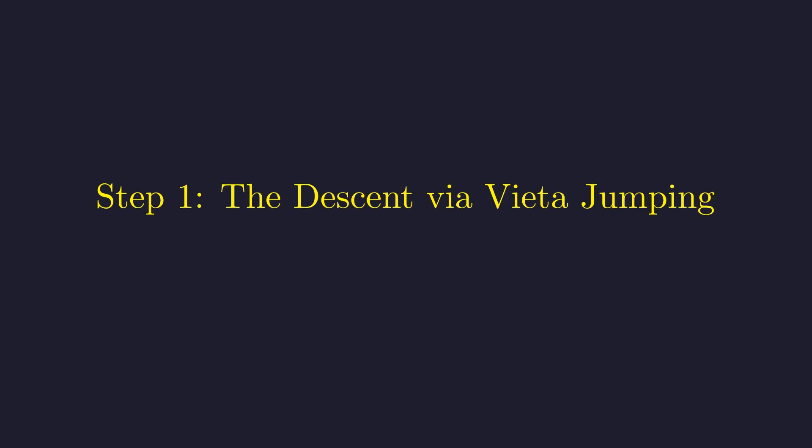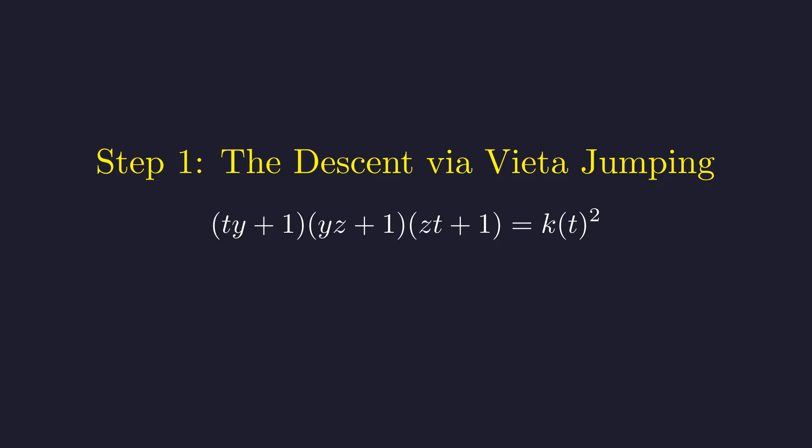Now comes the really beautiful part. We're going to construct a smaller counterexample from our supposedly minimal one. The technique we'll use is called Vieta jumping, and it's one of those tools that feels almost like cheating once you see how it works. Here's the idea. We'll keep y and z fixed, but replace x with some variable t. We want to find integer values of t that make this whole expression a perfect square. When we expand out the terms involving t, something lovely happens. We get a quadratic expression.